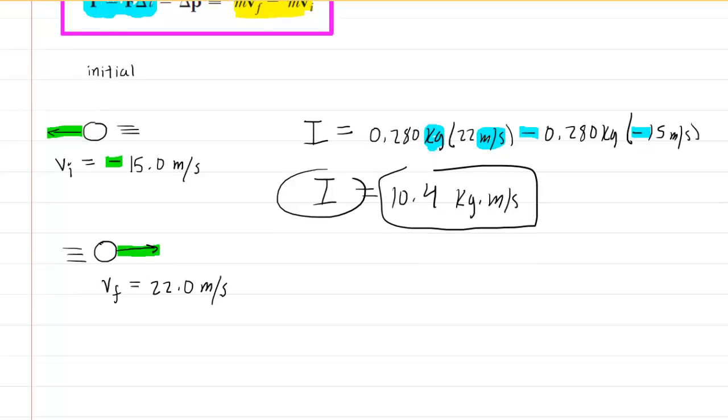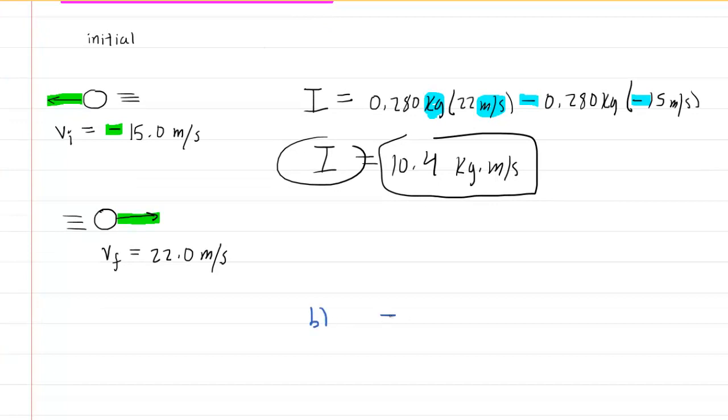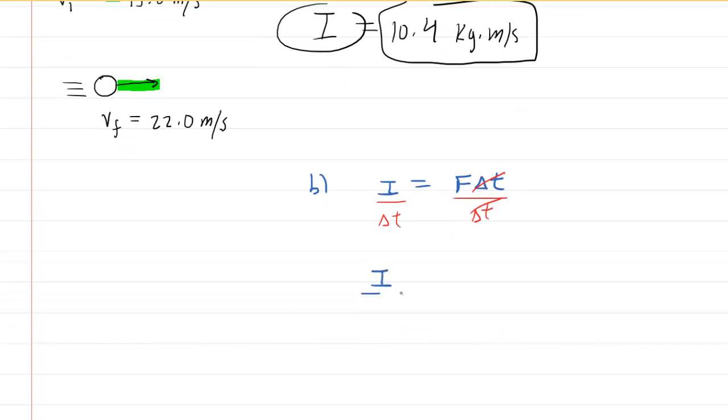Let's come down here. For part B, we'll write that equation out. Since we are asked to calculate the force, it would be useful to solve this equation for force. Divide both sides by the time interval delta T. The delta T's will cancel, and the average force will simply be the impulse divided by the given time interval.